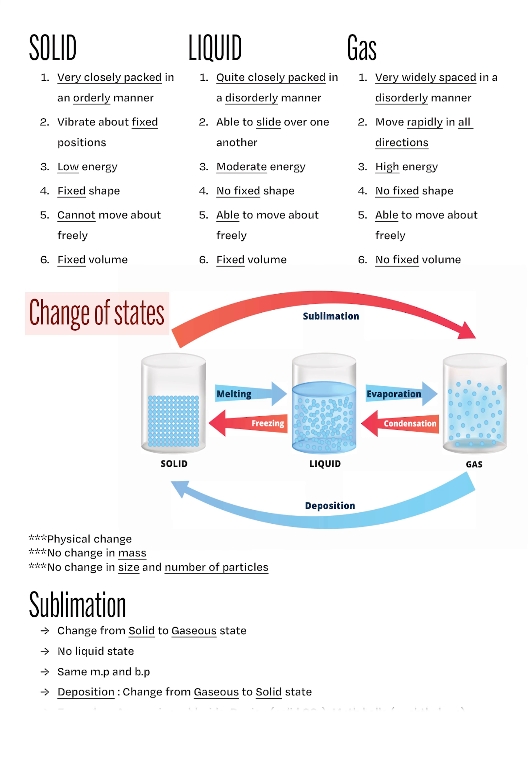Next, we go into more details about some of these changes of state. We will start with sublimation. Sublimation occurs when a solid changes directly to gaseous state, totally bypassing the liquid phase. This can happen when the melting and boiling point of a substance is the same. The reverse of sublimation is known as deposition.